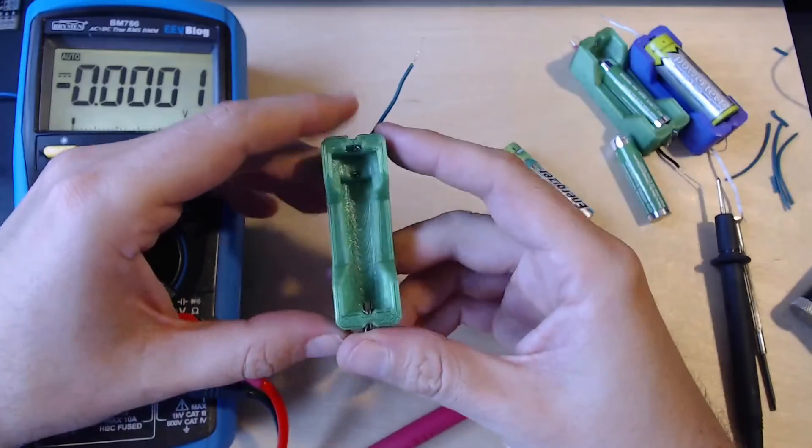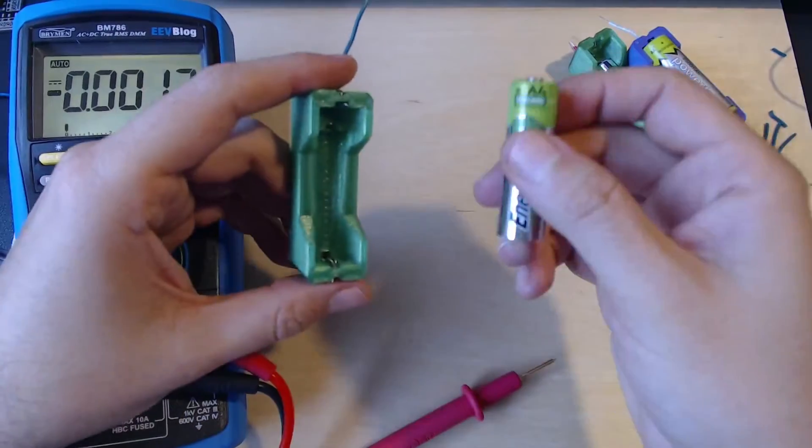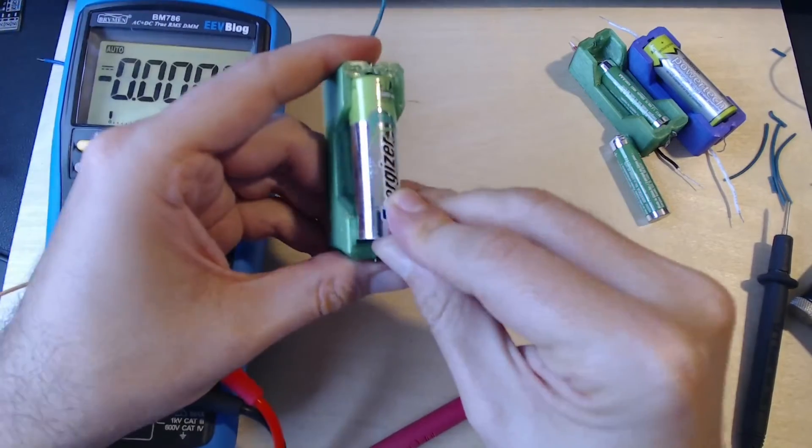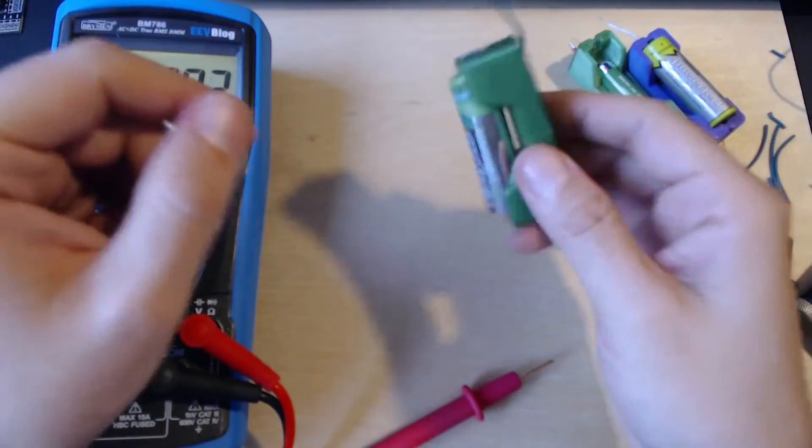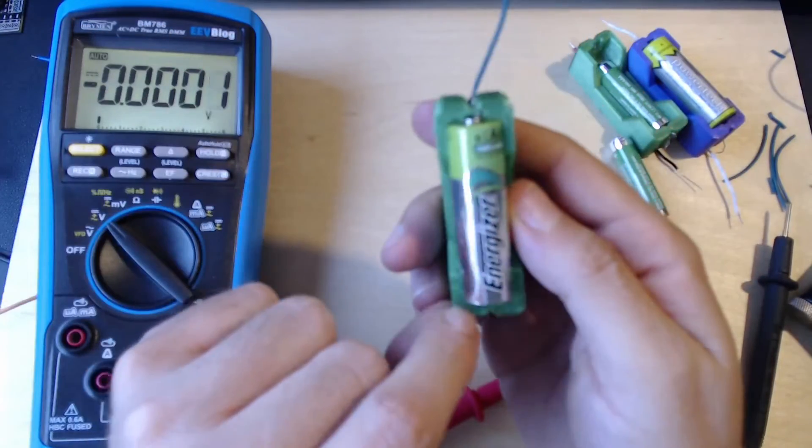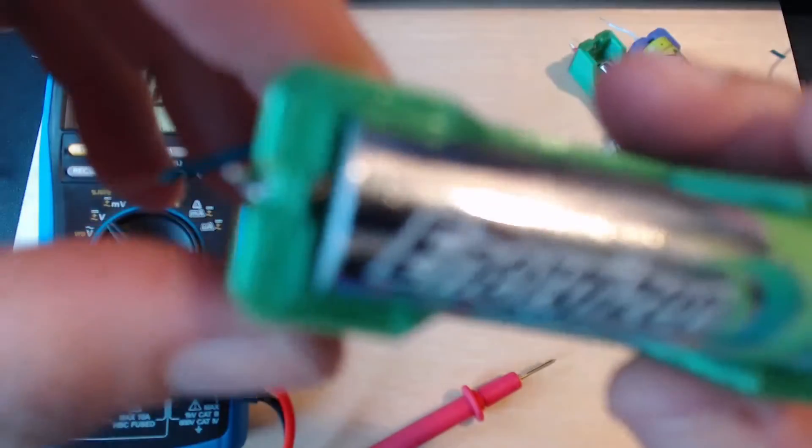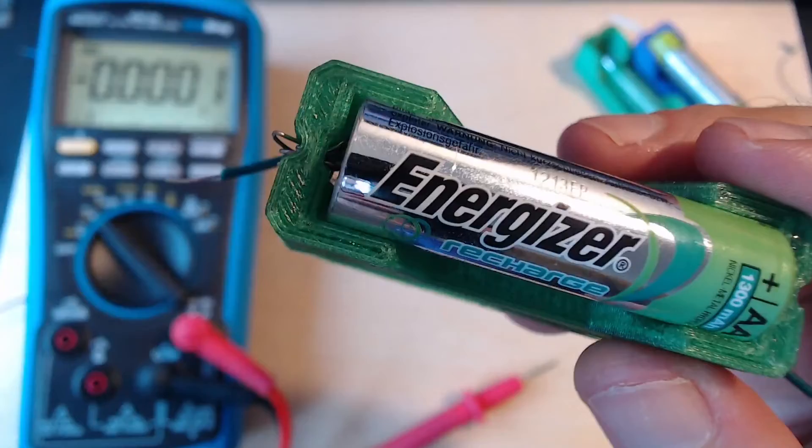Once you're done, test your contacts with different sizes and brands of batteries using a multimeter. Let's start with the AA battery first. I'm just going to fit the positive terminal first and then push for the negative terminal and just make sure that it's nice and tight. If the battery isn't sitting there tightly, obviously your contacts will not work. You can have a visual inspection on the contacts as well just to make sure that everything works as intended.